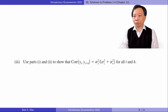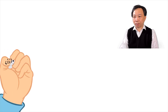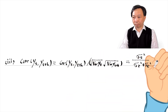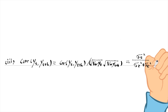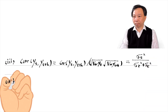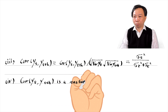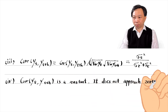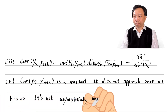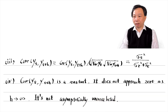In part three, we use the correlation definition to show that it equals sigma Z squared divided by the sum of sigma Z squared and sigma E squared. In part four, does Yt satisfy the intuitive requirement for being asymptotically uncorrelated? No — the correlation between Yt and Yt plus H is a constant. It does not approach zero as H approaches infinity. Therefore, Yt is not asymptotically uncorrelated.